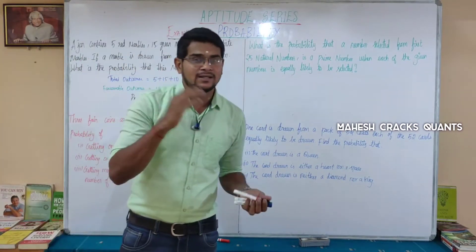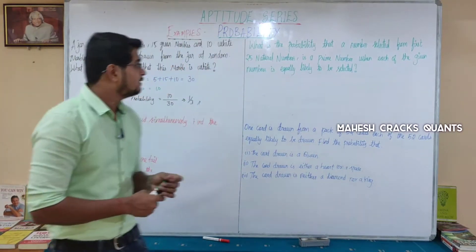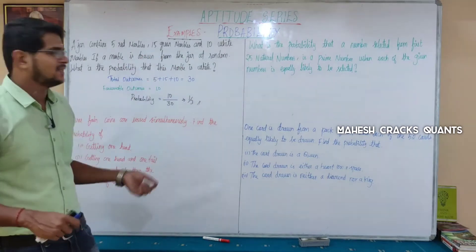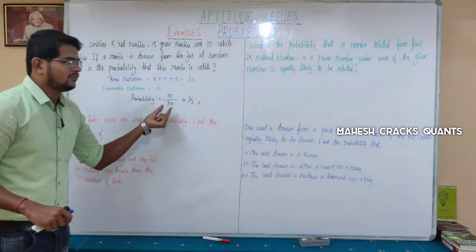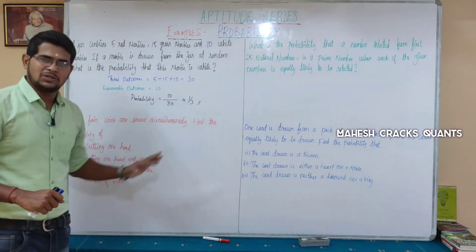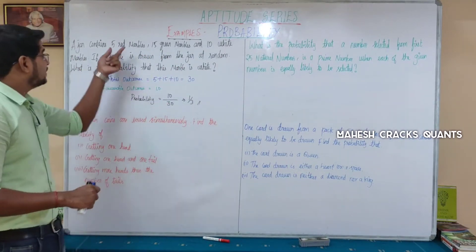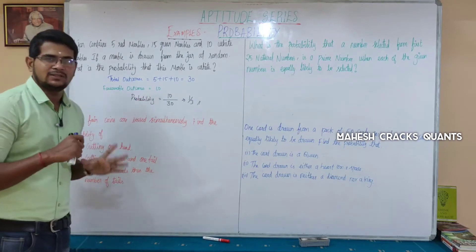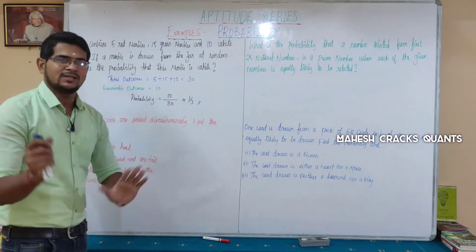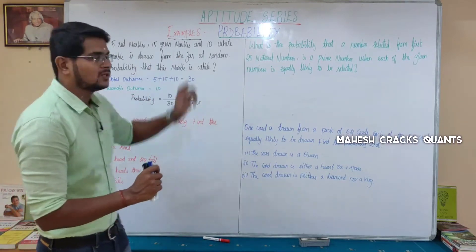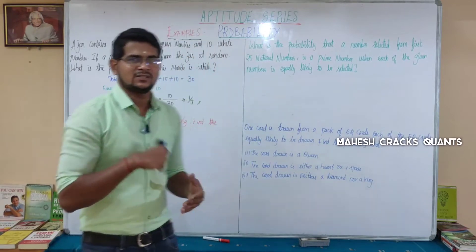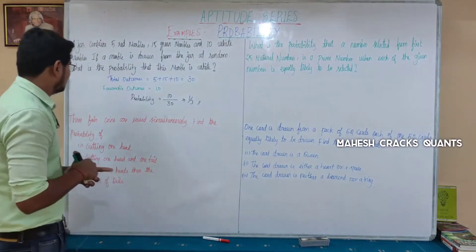What is the probability of drawing green? It is 15 by 30, which simplifies to 1 by 2. If you want red, it is 5 by 30, which simplifies to 1 by 6. Those are the answers. Done.